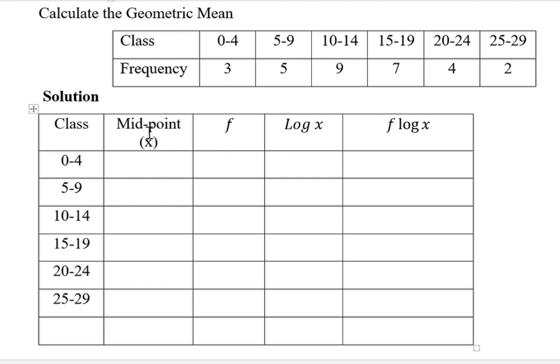Then we need to calculate the midpoint x. This one is calculated by taking these figures, we add them, divide by 2. So 0 plus 4 gives us 4, divide by 2 gives us 2. 5 plus 9 is 14, divide by 2 gives us 7. 10 plus 14 is 24, divide by 2 gives us 12.